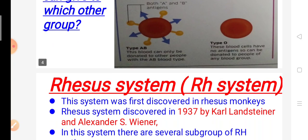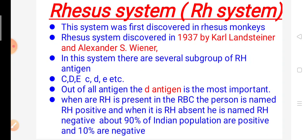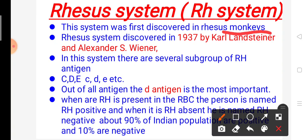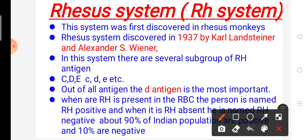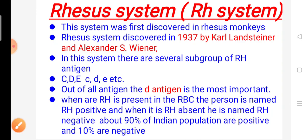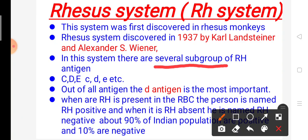Now let's look at the Rhesus system. This system was first discovered in rhesus monkeys. It was discovered in 1937 by Karl Landsteiner and Alexander S. Wiener. In this system there are several subgroups of Rh antigens, including C, D, E and others.